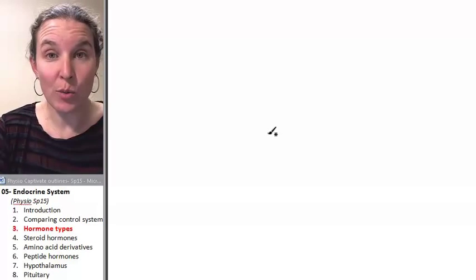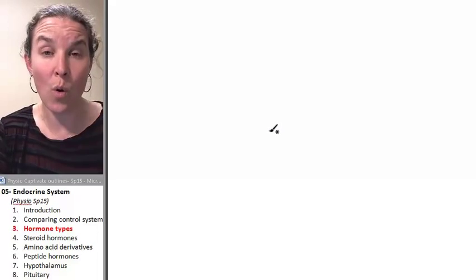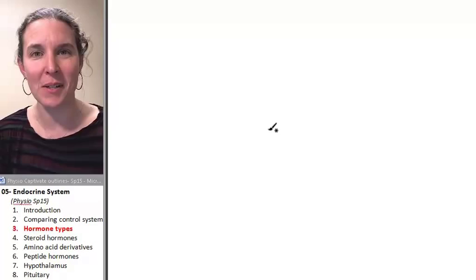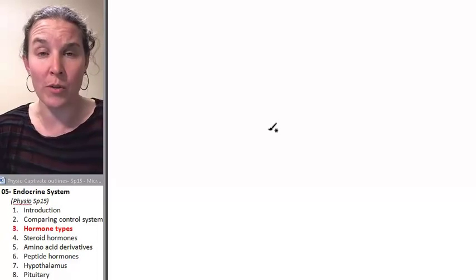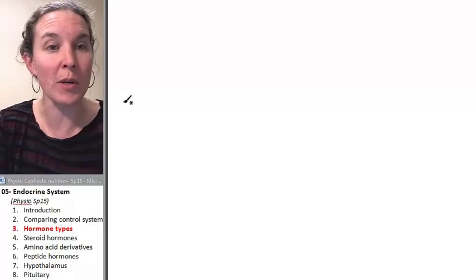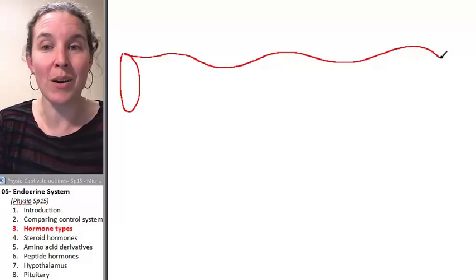The first thing we should definitely do before moving any further is define a hormone. Hormones define the endocrine system. So an endocrine organ is something that produces a hormone. So we should definitely have a sense of what is this hormone you speak of? So we're going to play a little Pictionary because that's how I roll.